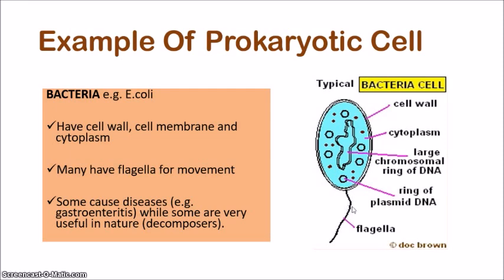Bacteria can be good or bad. Bad bacteria cause diseases, such as gastroenteritis. Good bacteria are very useful in nature — those would be like the decomposers. Think of your nutrient cycles: the carbon cycle, the nitrogen cycle. This is what a typical bacterial cell looks like. There's no nucleus, no mitochondria, none of those membrane-bound organelles.